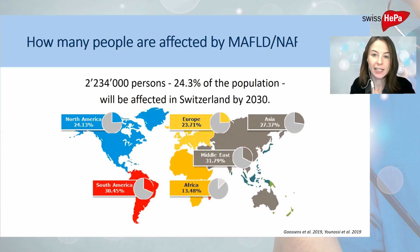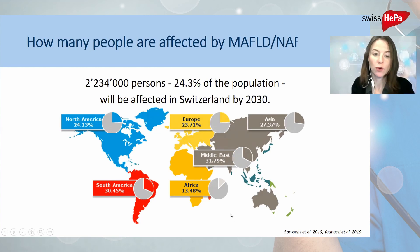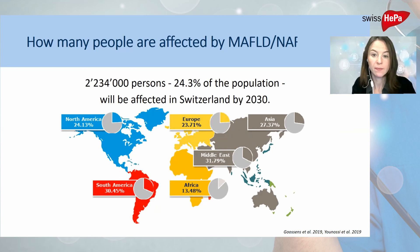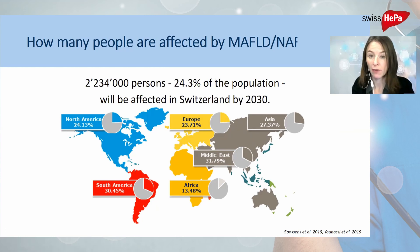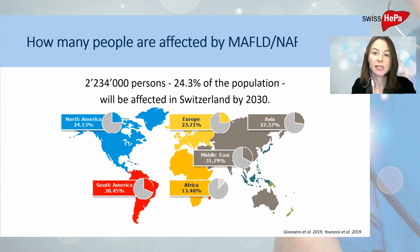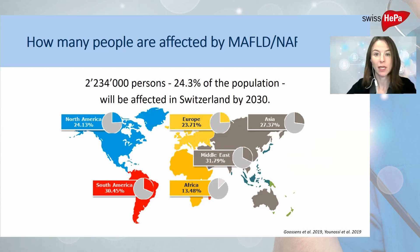MAFLD and NAFLD are extremely common. As you can see on this map, between 13% and 30% of the population, depending on the region, are affected. In South America the prevalence is highest, with around one third of the population having fatty liver disease. In Europe it is about a quarter of the population, which is also the case for Switzerland. Estimates have shown that by 2030, around 24% of the population will have fatty liver disease, meaning over 2 million people in Switzerland will be living with MAFLD or NAFLD.